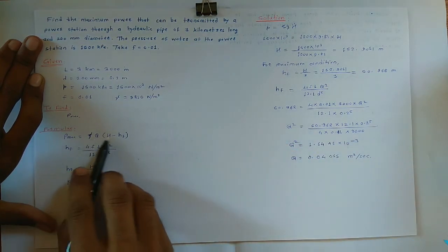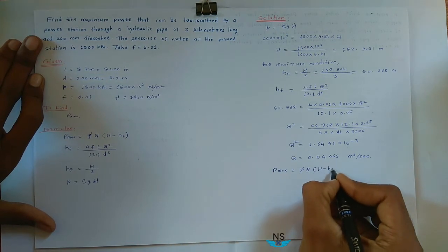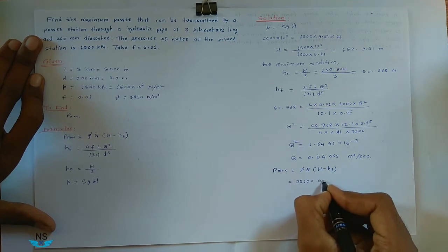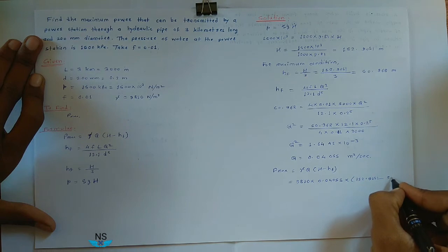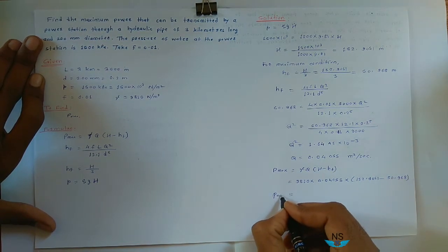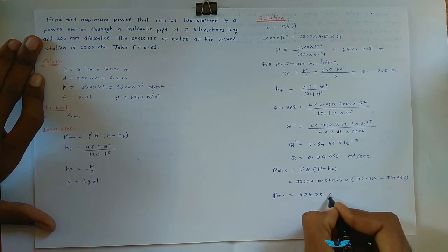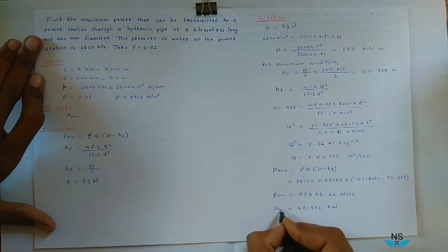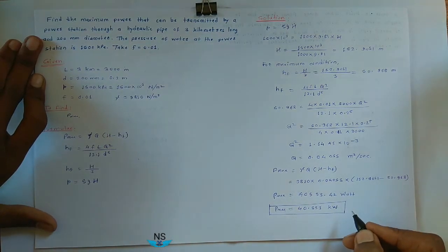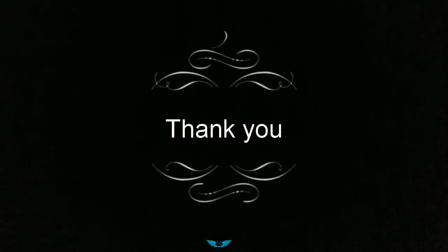So now we have all the values: gamma we know, Q we know, H is known, HF is known. So find maximum power. Maximum power Pmax is equal to gamma Q H minus HF, so gamma is 9810 into Q, 0.04055, into H, 152.9051 minus HF, 50.968. Now Pmax is equal to, put all these values in calculator, you get 40553.42 watt, that is equal to 40.553 kilowatt. This is our requirement, maximum power 40.553 kilowatt.